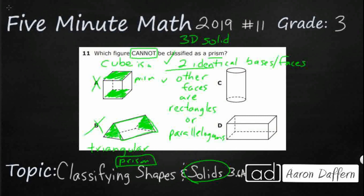So we're stuck with C and D. So do we have two identical, let's go ahead and name this first, this is a cylinder.